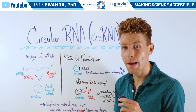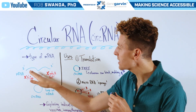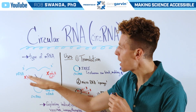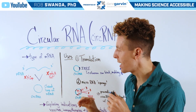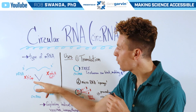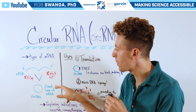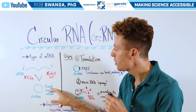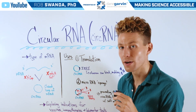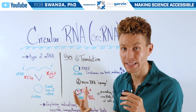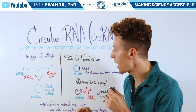CircRNA is a type of mRNA, however it lacks the 5' cap and the polyA tail, and it forms a covalent bond on that mRNA strand to create a closed loop of mRNA — and that's where it gets its name, circRNA.